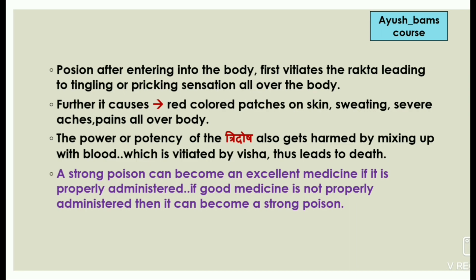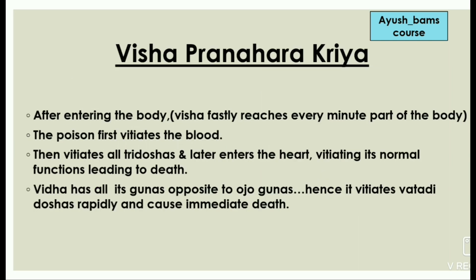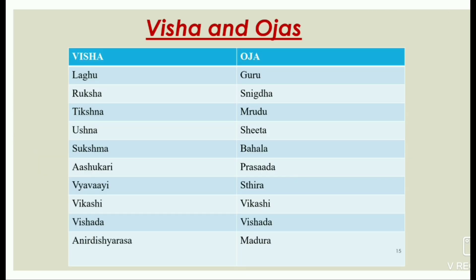The power or potency of the Tridosha gets harmed by mixing up with blood vitiated by Visha, thus leading to death. A strong poison can become an excellent medicine if it is properly administered; if a good medicine is not properly administered, then it can become a strong poison — we should remember this. Visha Pranahara Kriya: after entering the body, Visha quickly reaches every minute part. The poison first vitiates the blood, then all three doshas, and later enters the heart, vitiating its normal functions and leading to death.